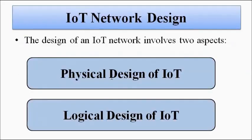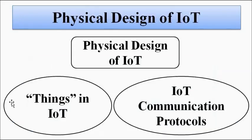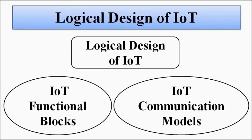To summarize, the design of an IoT network involves two aspects: physical and logical. The physical design covers defining the things in IoT and the communication protocols. The logical design covers the functional blocks and the communication models. We'll be discussing each of these topics in detail in a step-by-step manner in future videos. Please subscribe to Engineering Tutorial for more videos related to electrical, electronics, instrumentation, and communication engineering.